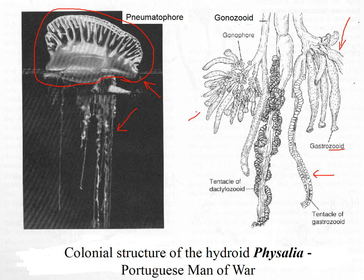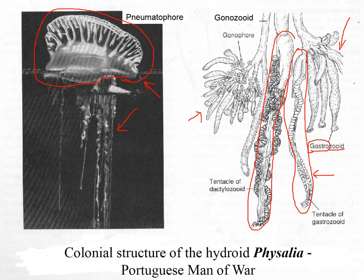There are three types. A gastrozoid — 'gastro' meaning stomach — these ones are specialized for digestion; they digest the food. The dactylozoid: here's one polyp, and here would be another. These ones are specialized for hunting — these are the tentacles dripping down that catch prey. Once they catch it, they pass the food to the gastrozoids, which put it into their guts and digest it. They are specialized just for very efficient digestion, and then share the food with the rest of the colony.